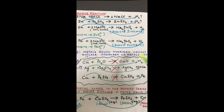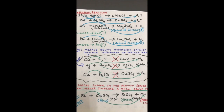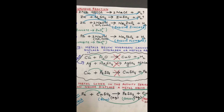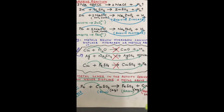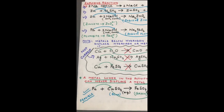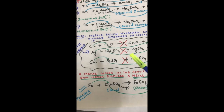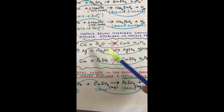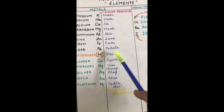It is very important to note that metals below hydrogen cannot displace hydrogen, and metals lower in the activity series cannot displace metals above them. A metal lower in the activity series can never displace a metal above it. For example, copper made to react with water will never form copper oxide and hydrogen — copper cannot displace hydrogen because copper is below hydrogen in the activity series.